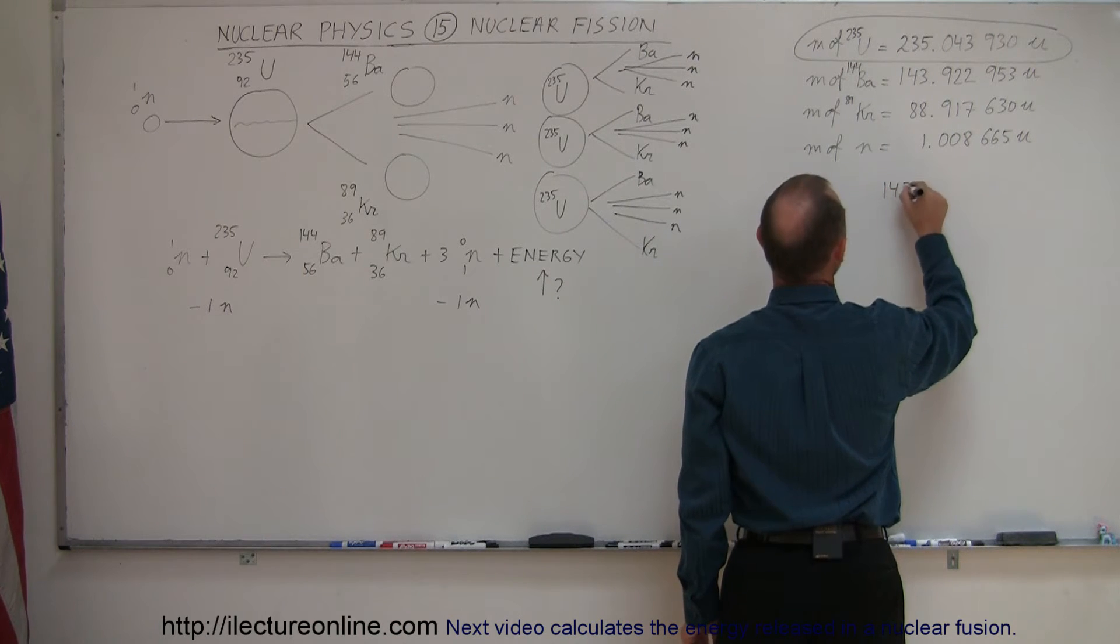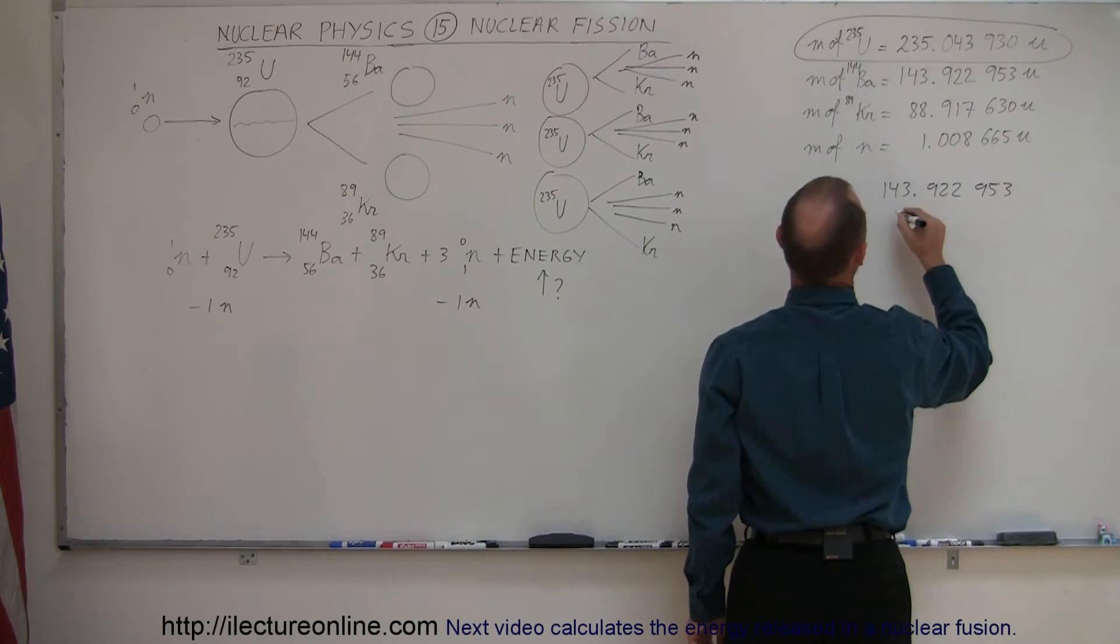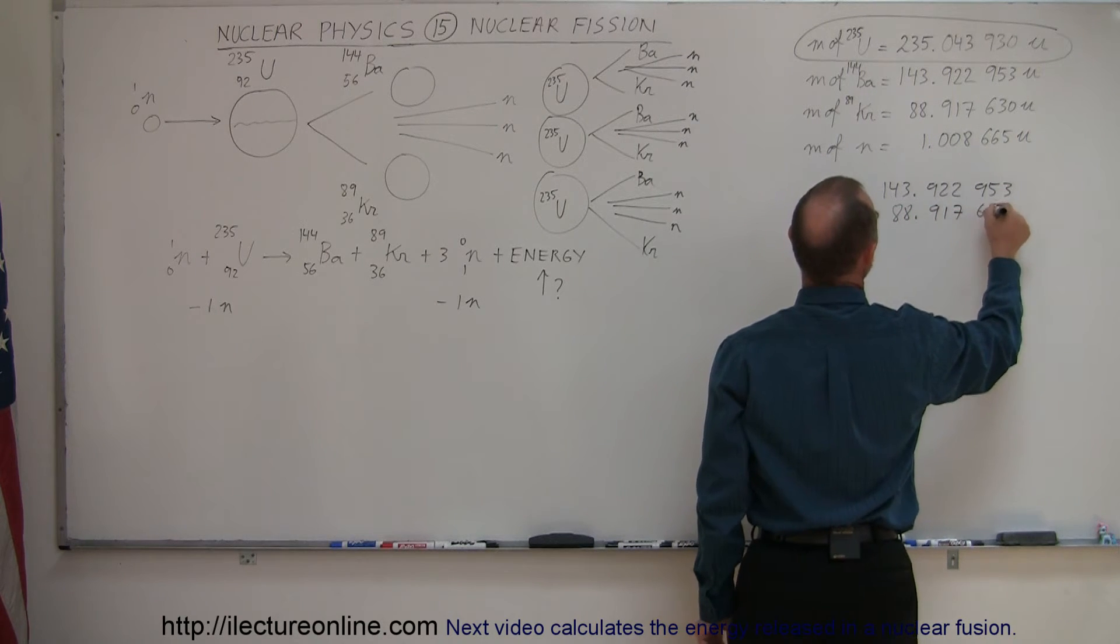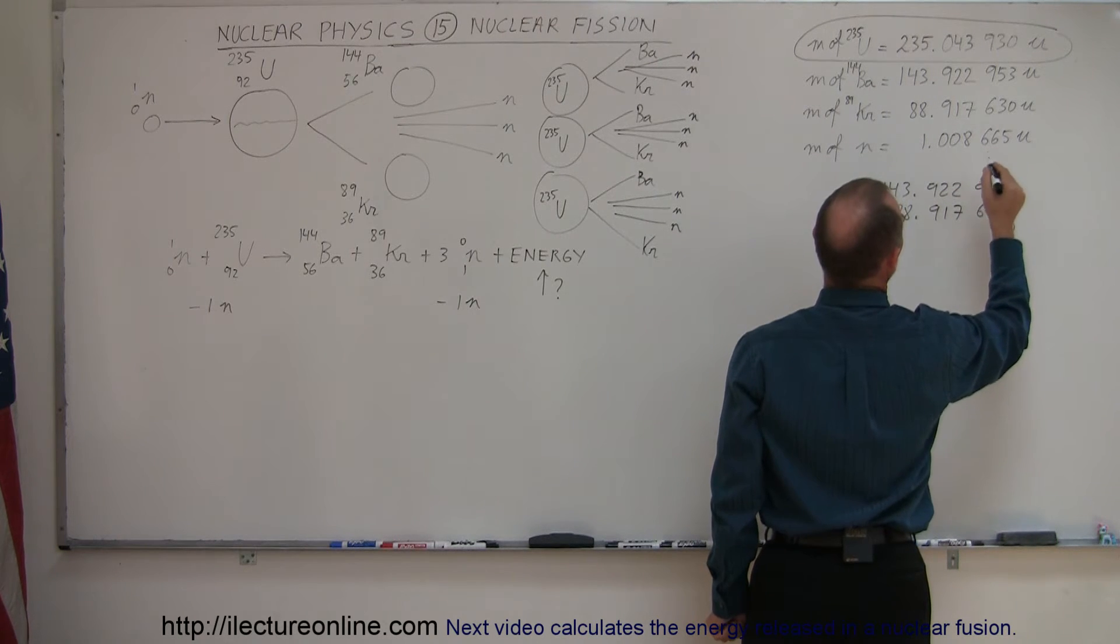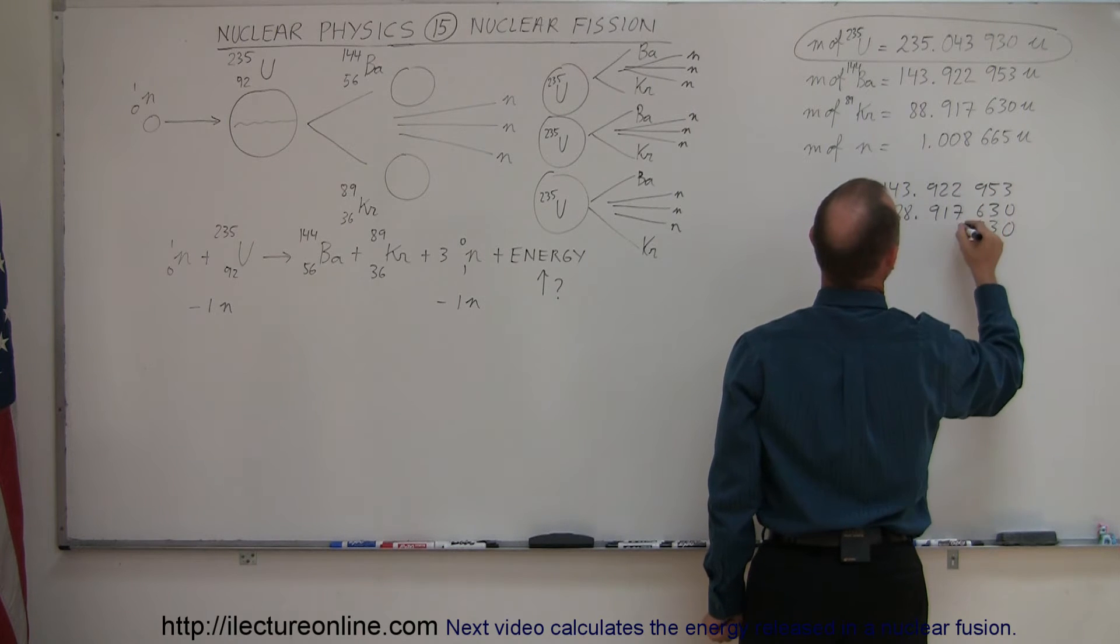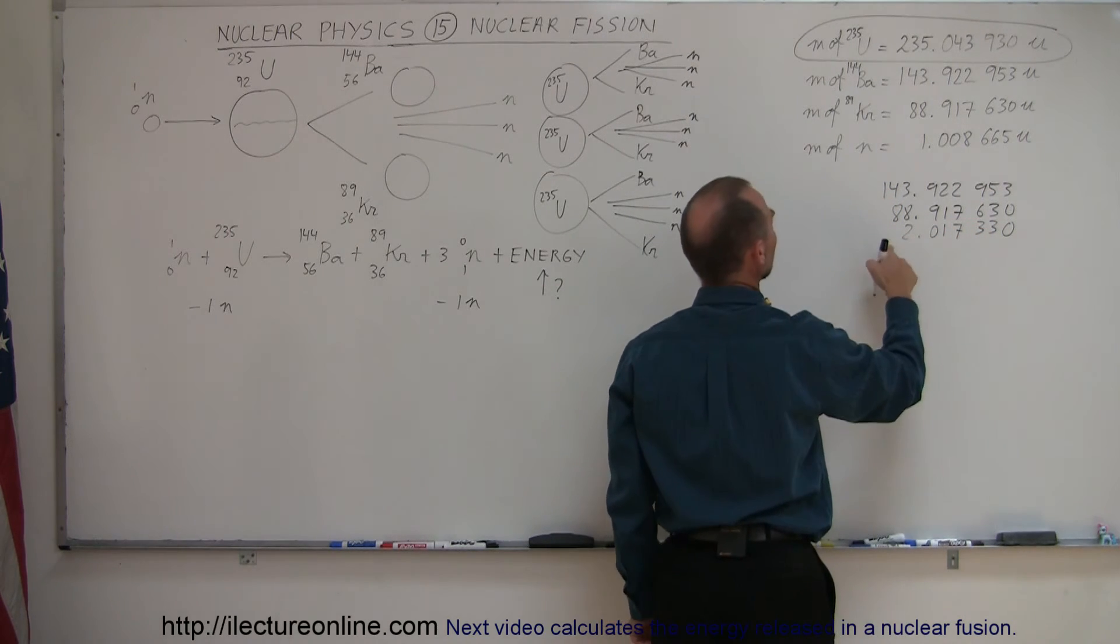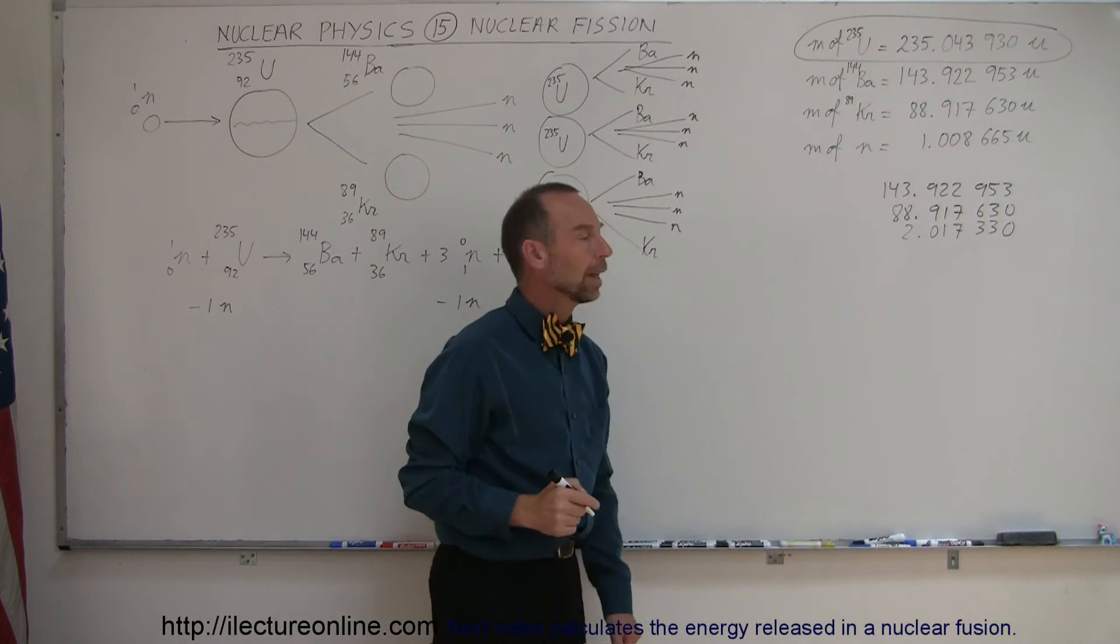So, we have 143.922953 added to 88.917630. We need two of these, so that would be 2.014102. So that's two neutrons, one krypton, and one barium isotope.